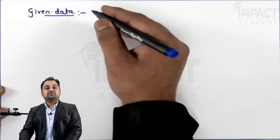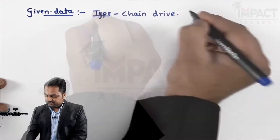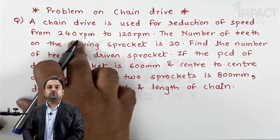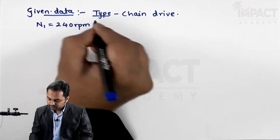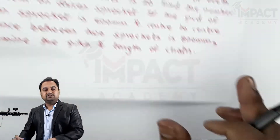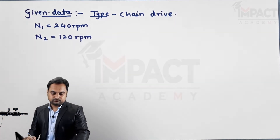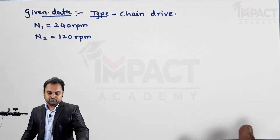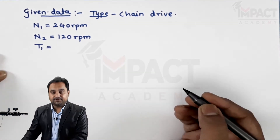In the data, first I'll mention the type of drive. Given in the problem is chain drive. Next, it is used for reduction of speed from 240 rpm — that is the speed of the driving sprocket, denoted as N1 — to 120 rpm, which is the speed of the driven sprocket, N2. The number of teeth on the driving sprocket is 20, denoted as T1.